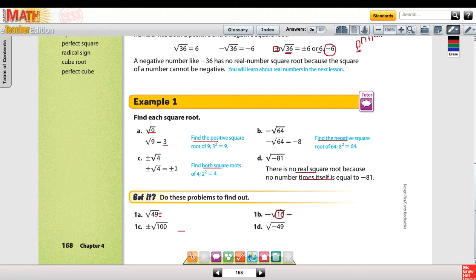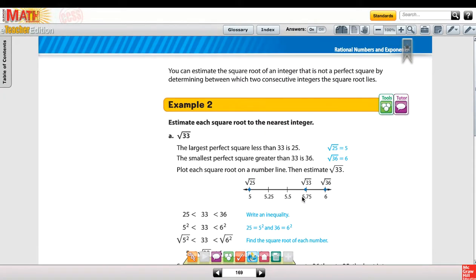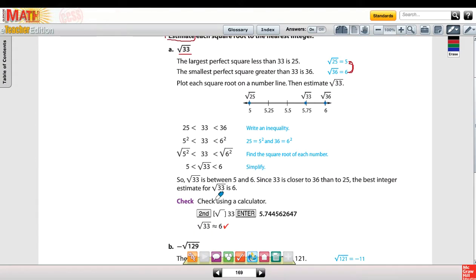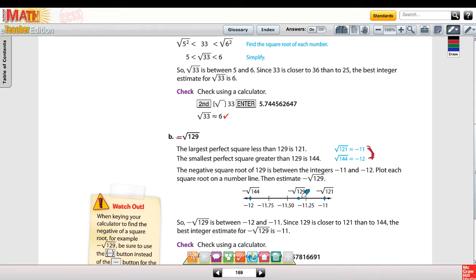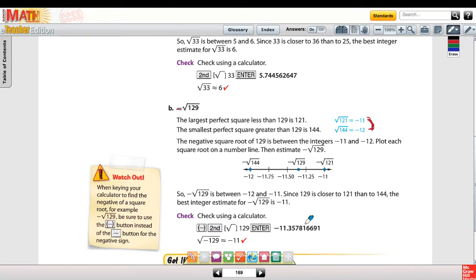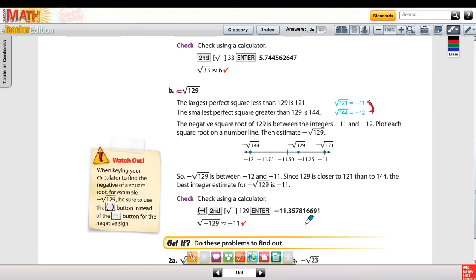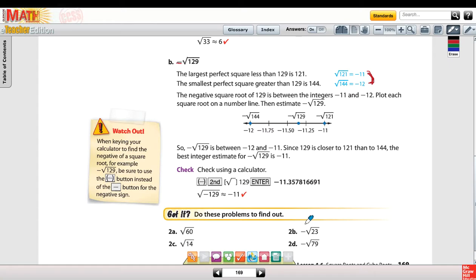Going on to the next page on 169, there is example 2 at the top. It says to estimate each square root. So we can have our perfect squares that we memorized, and we can use a calculator as another strategy. And another third strategy would be to estimate. So 33 on the number line falls somewhere between our perfect squares of 5 and 6. And so it falls somewhere in between there, and you can simplify that and use a calculator to find the exact answer. So for letter B here, 129 falls between the perfect squares of 11 and 12. And since it's a negative, we're going to put it between a negative 11 and a negative 12. Go ahead and pause the video and try to do 2a through 2d on your own.